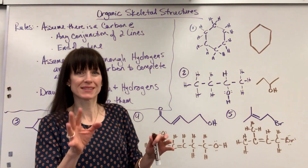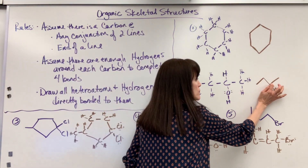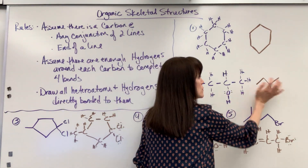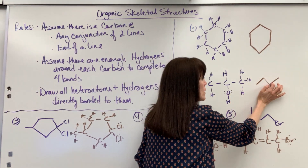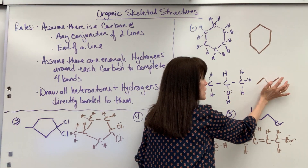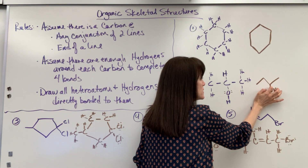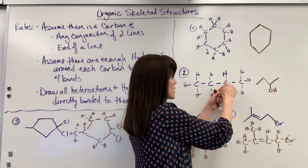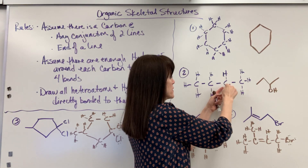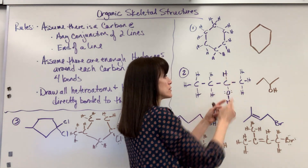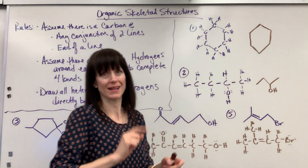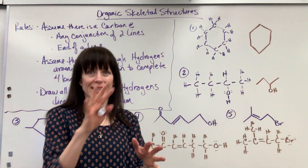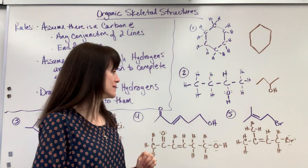This carbon right there has three bonds as it's written: one bond to this carbon, a bond to that carbon, and a bond to this oxygen. So it's understood there's just one hydrogen bonded to that carbon to get its full four bonds.